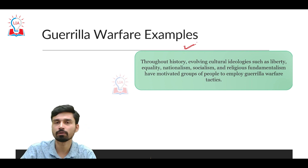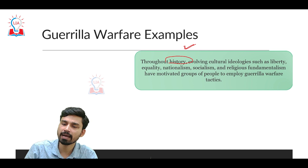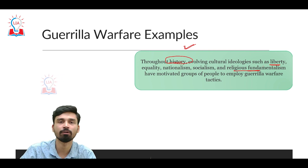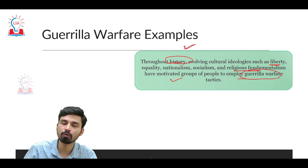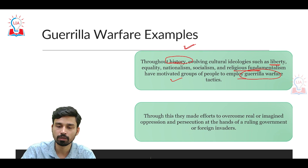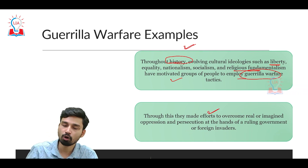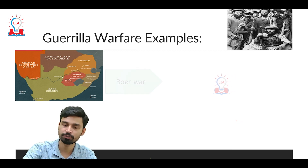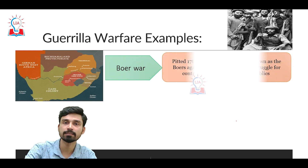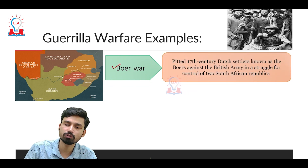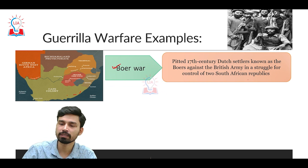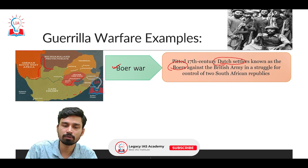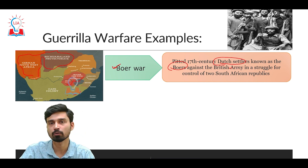Looking at notable historical examples, ideologies such as liberty, equality, nationalism, socialism, and religious fundamentalism have motivated large groups of people to employ guerrilla warfare to achieve political or ideological goals. Three key examples include: first, the Boer War in South Africa in the late 19th century, which was a conflict between the British colonial army and Dutch settlers known as Boers, who fought guerrilla warfare to assert control over two regions of South Africa under British control.